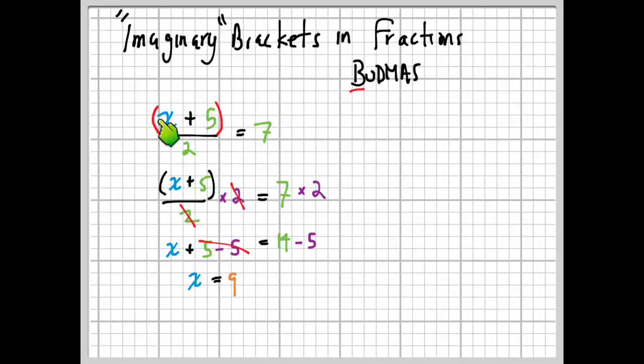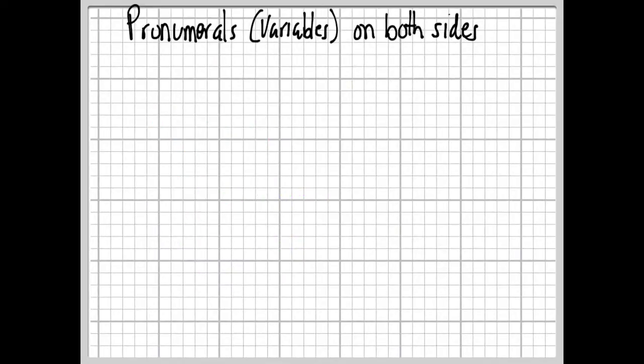Still really easy to check in your head. If we plug in a 9 right here, 9 plus 5 is 14, 14 divided by 2 is 7. Good to go. Simple. All right, now one more little scenario here for us: when there are pronumerals or variables on both sides of an equation.